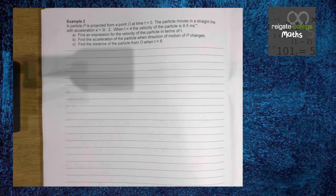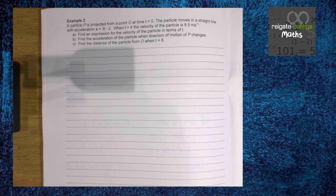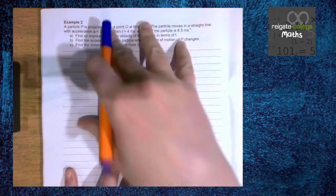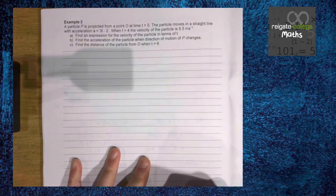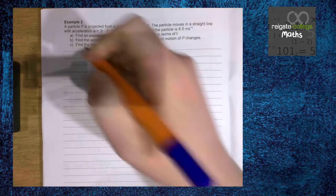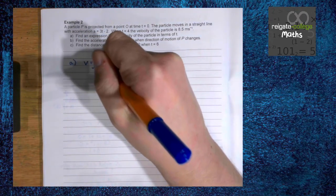So here's our second example. A particle p is projected from a point O at time t equals 0. The particle moves in a straight line with acceleration given there. When t equals 4, the velocity of the particle is 8.5 meters per second. Find an expression for the velocity of the particle in terms of t. Now projectiles is a big topic for the second year, but in terms of looking at this side of things with the integration, we do it now. We find an expression for velocity. We know velocity is the integral of acceleration.